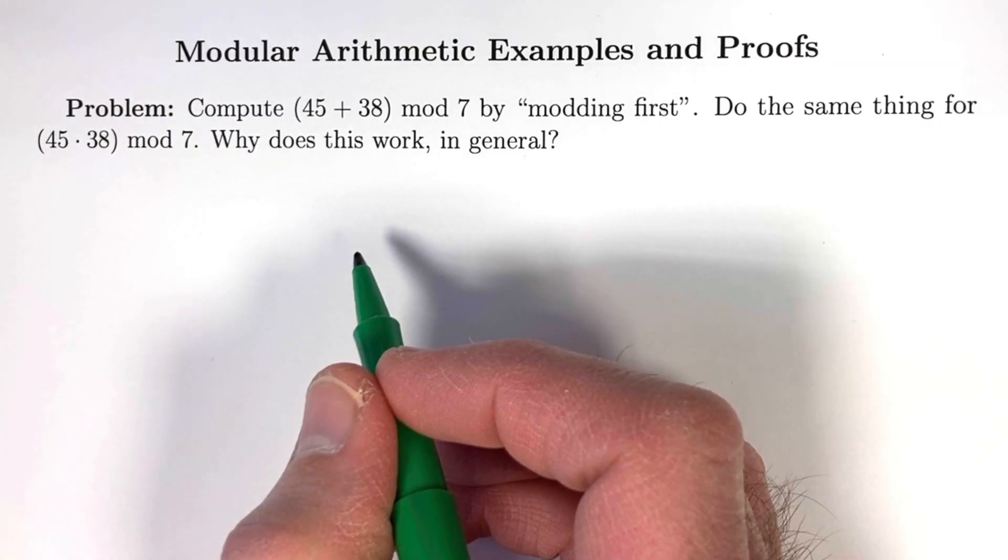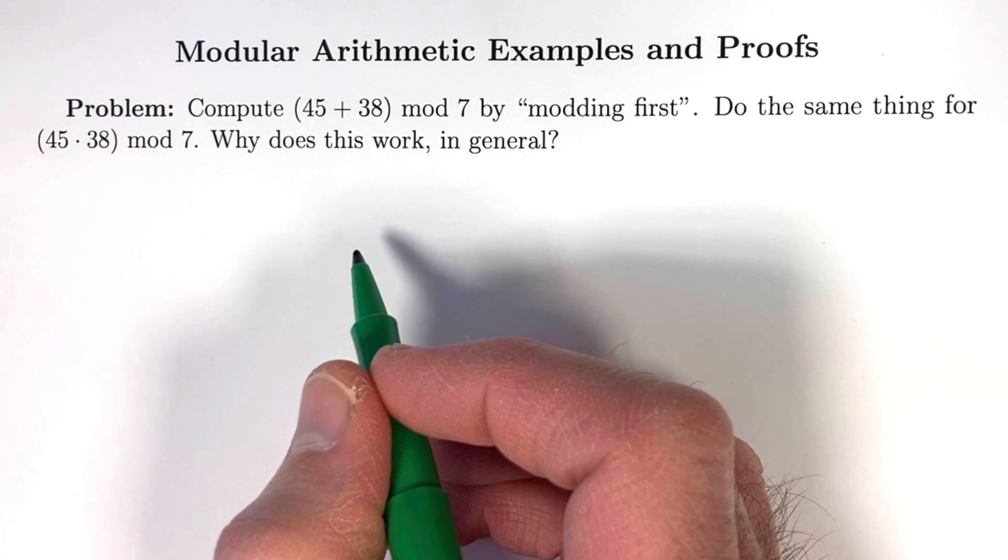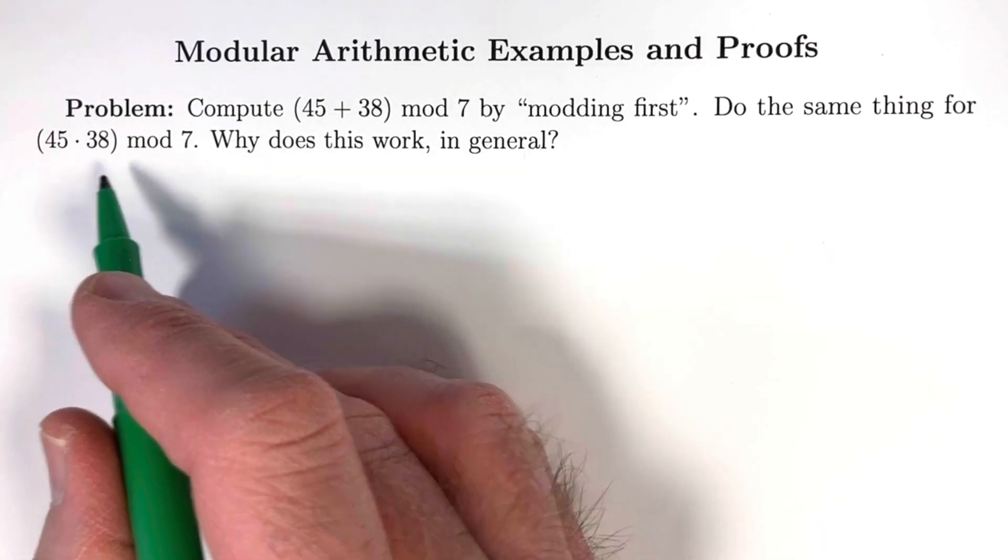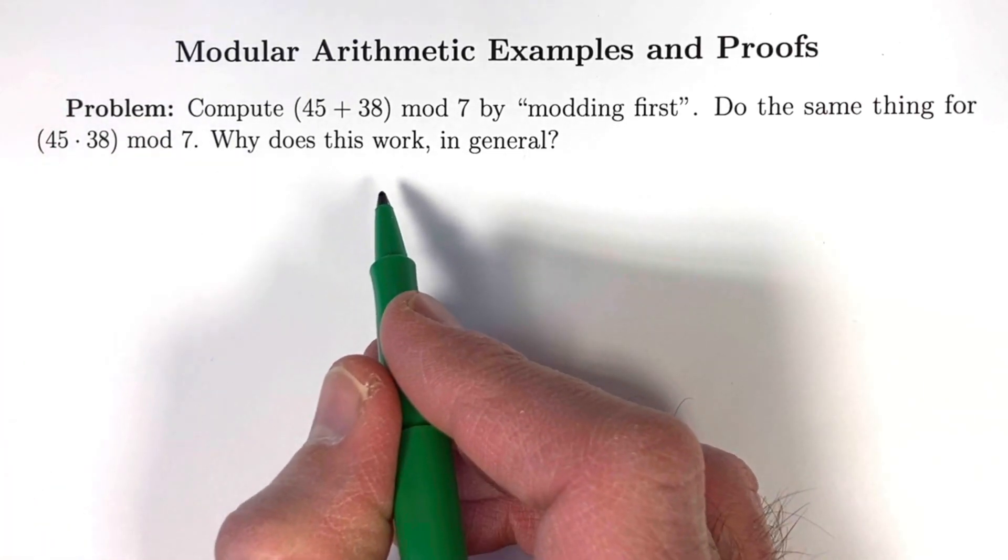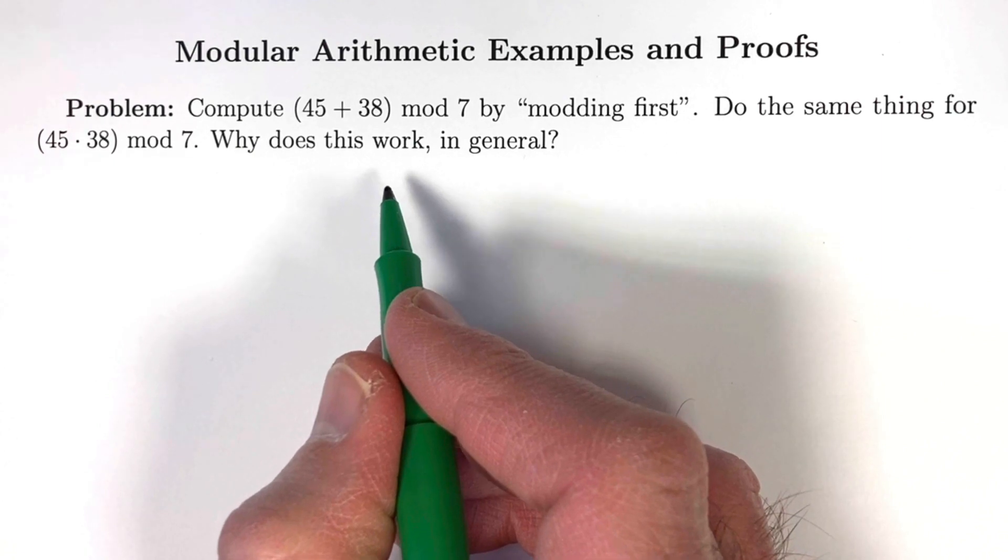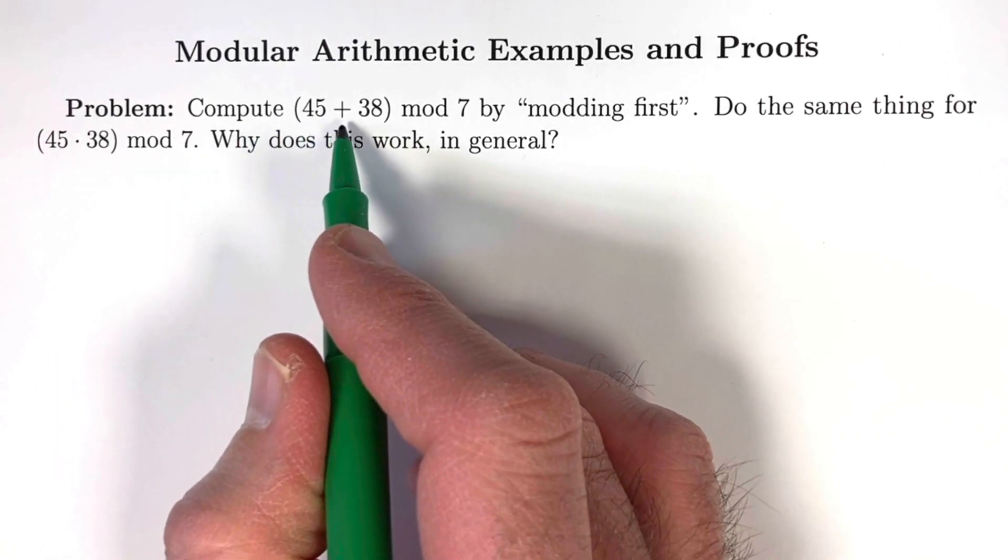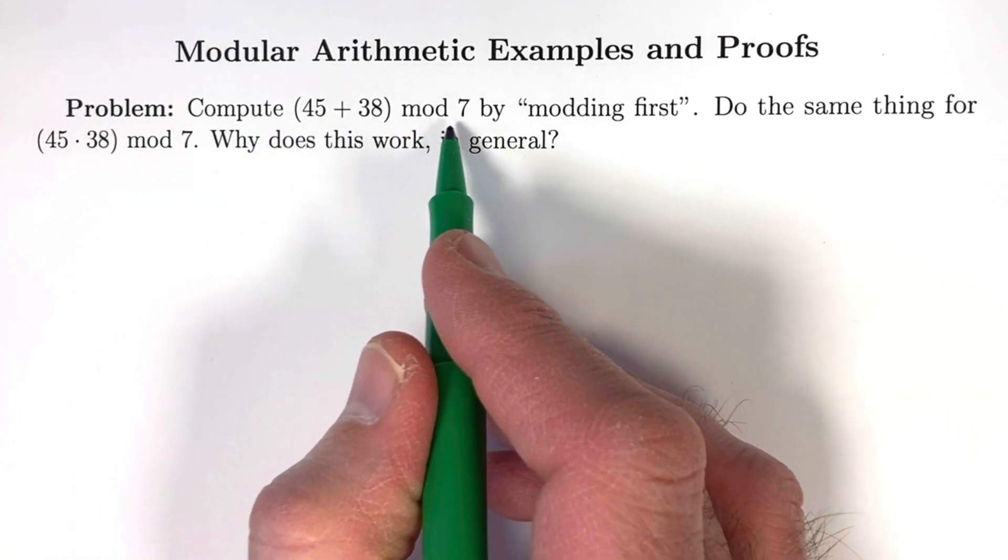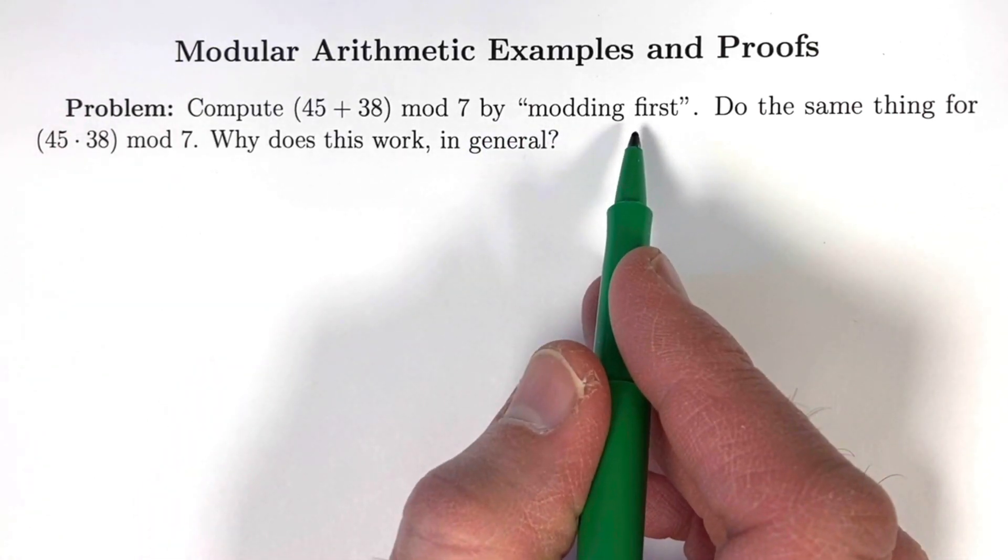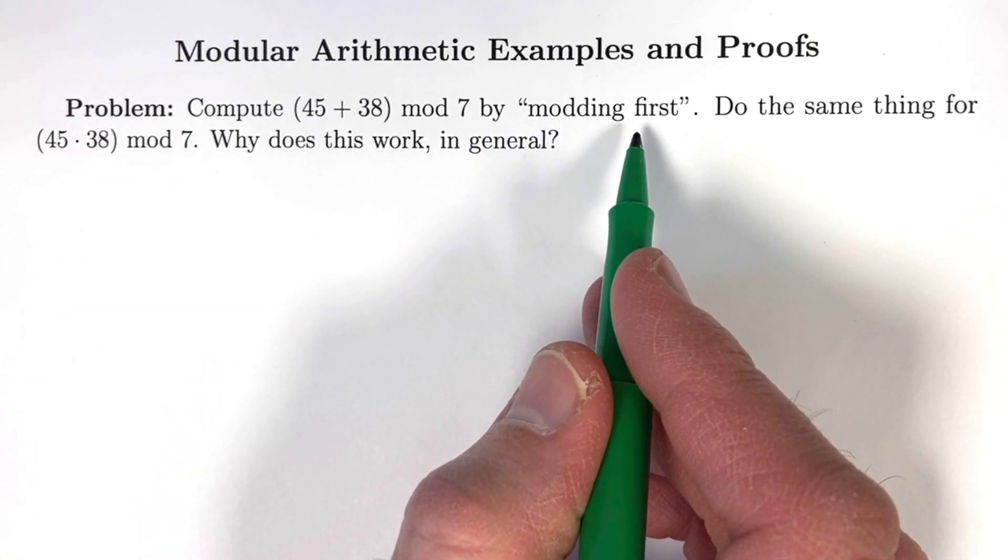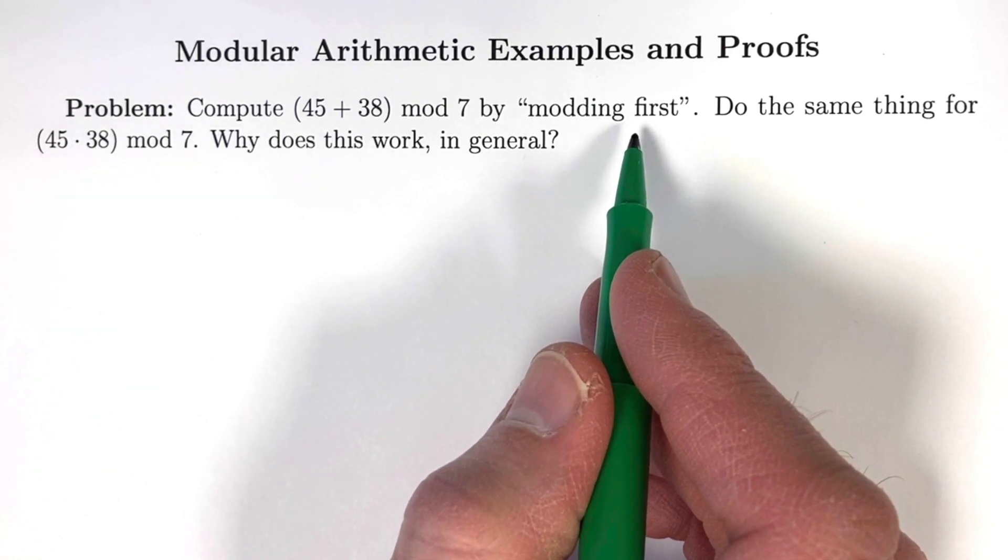But let's be more formal now in how we write this. We'll also do a multiplication example, and we'll also try to explain why this works in general with a proof. The directions say compute 45 plus 38 mod 7 by modding first. What in the world does that mean? This is modular arithmetic, also called clock arithmetic, and it means exactly what I said before.